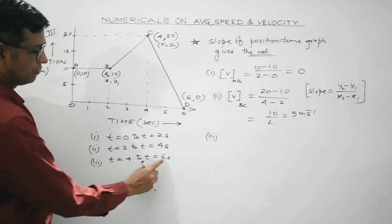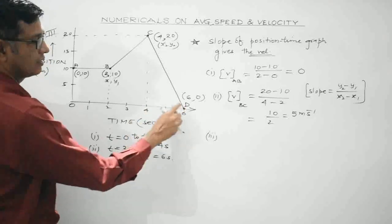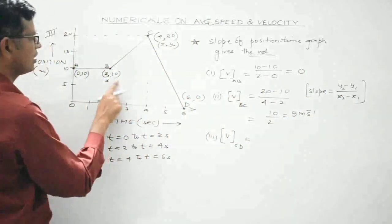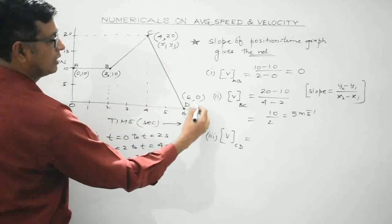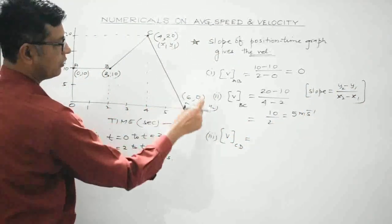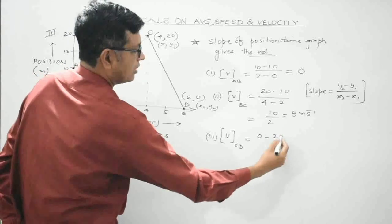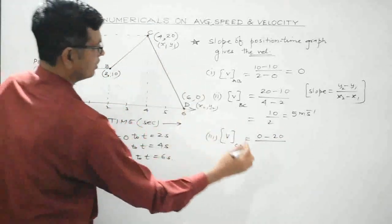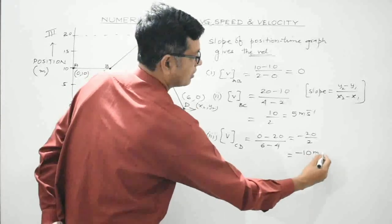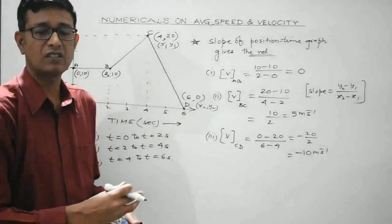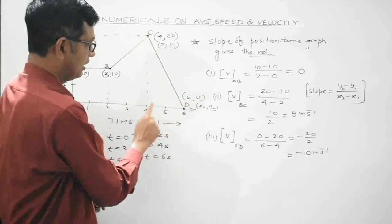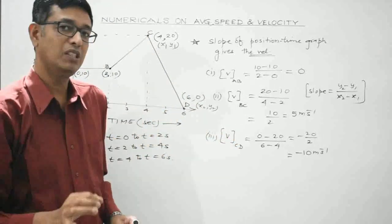For segment C to D (t = 4 to 6 seconds): slope = (y₂ − y₁)/(x₂ − x₁) = (0 − 20)/(6 − 4) = −20/2 = −10 m/s. The negative sign represents direction. So velocity during t = 4 to 6 seconds is −10 meter per second.